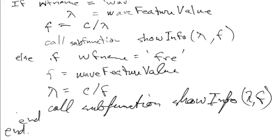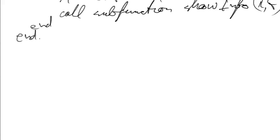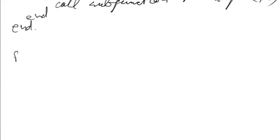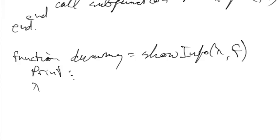I think that covers it — it's a bit of an outline. I don't know that I'll do it exactly that way, but it shows all the ideas of what I want to do. Then the subfunction: dummy = show_info(lambda, f). All it does is actually print information out — display or print to the screen.